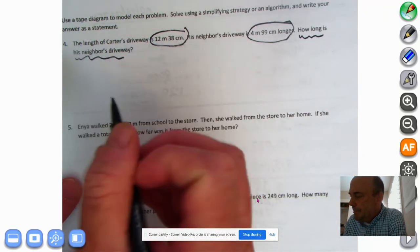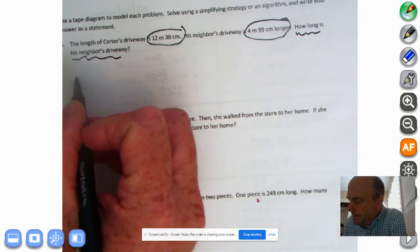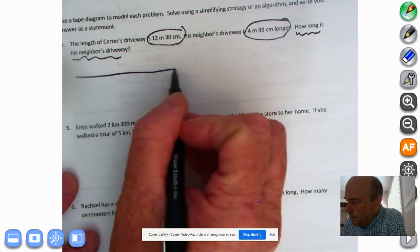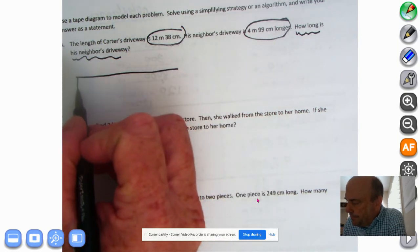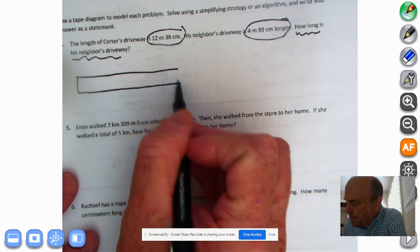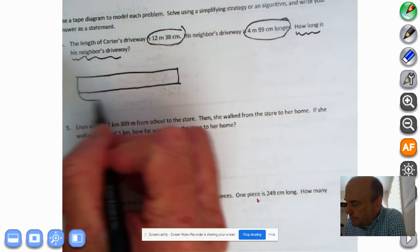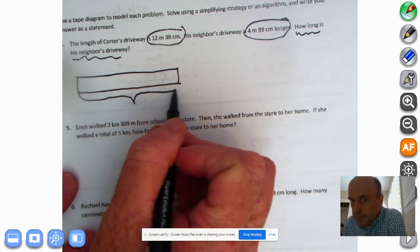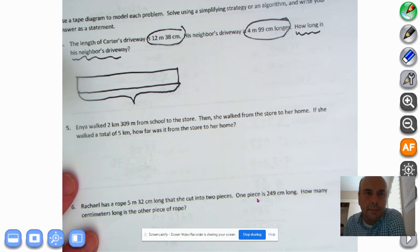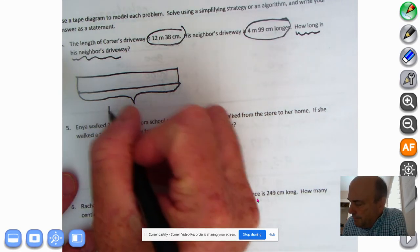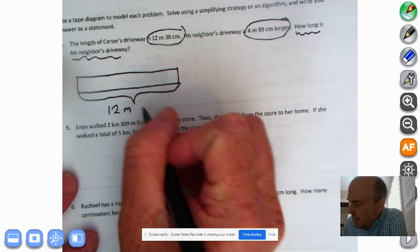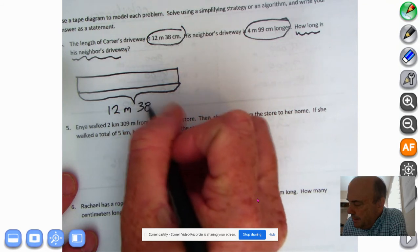First thing we're going to do is use the tape diagram. So Carter's driveway is, and we're copycats, 12 meters, 38 centimeters.